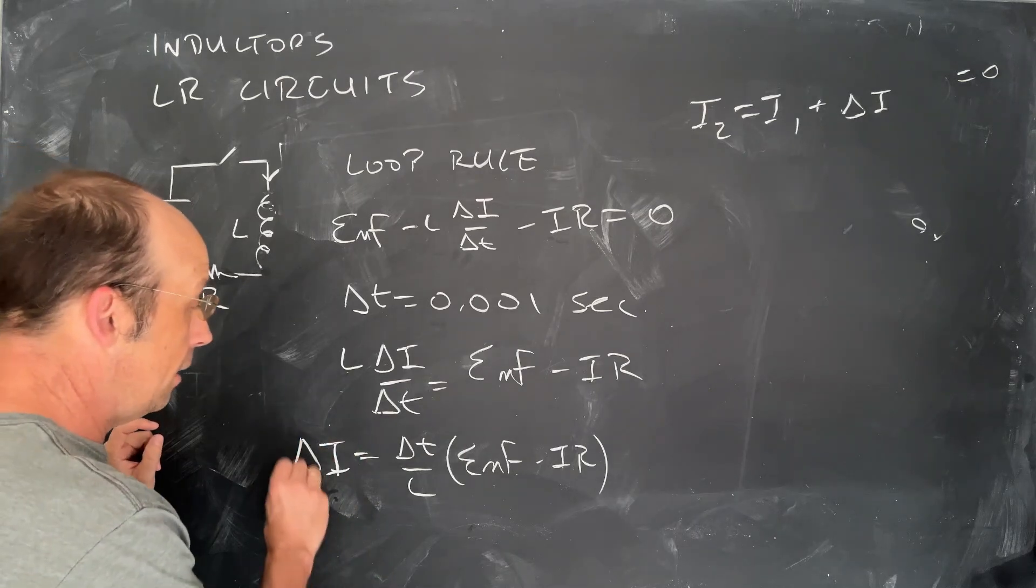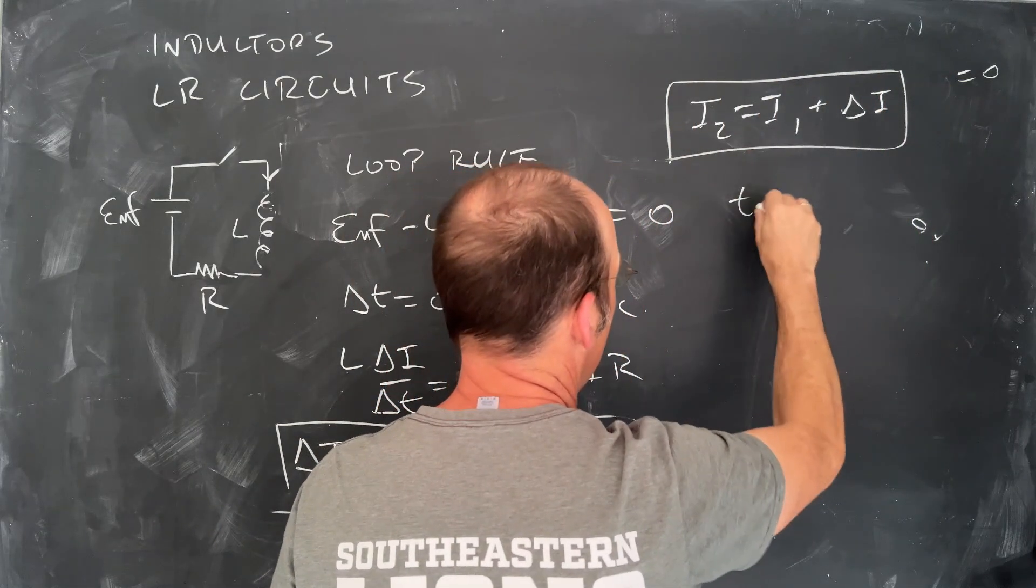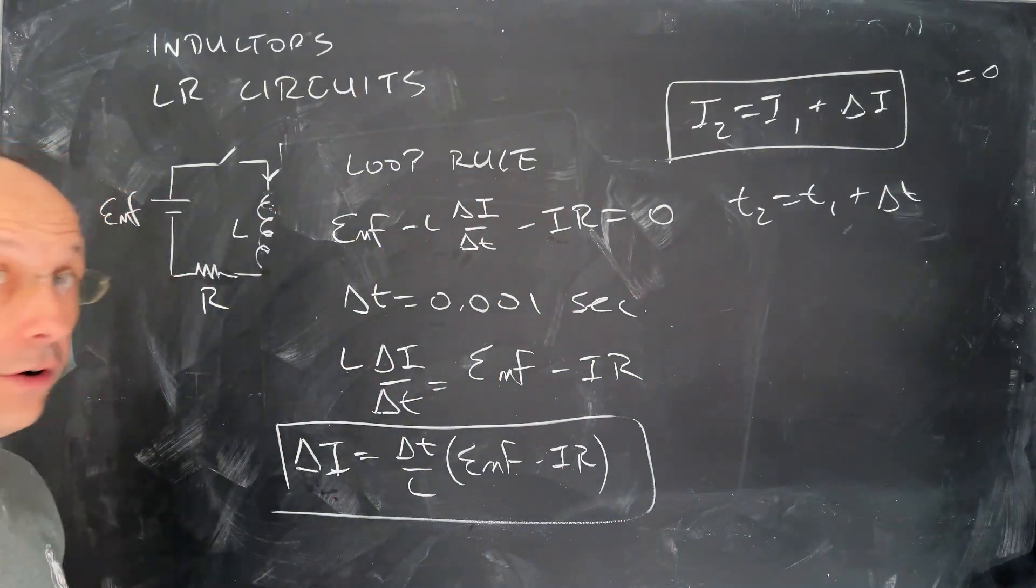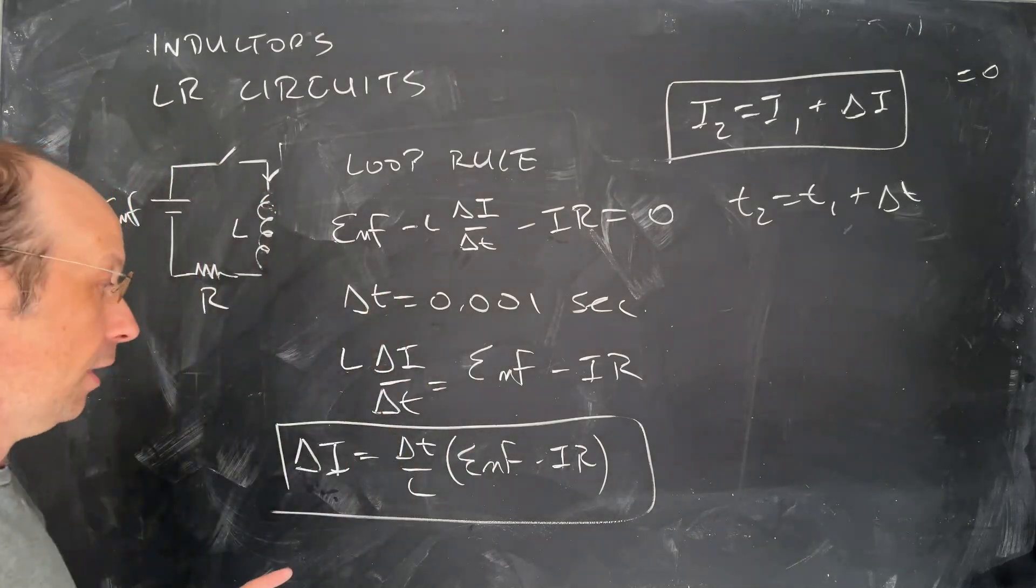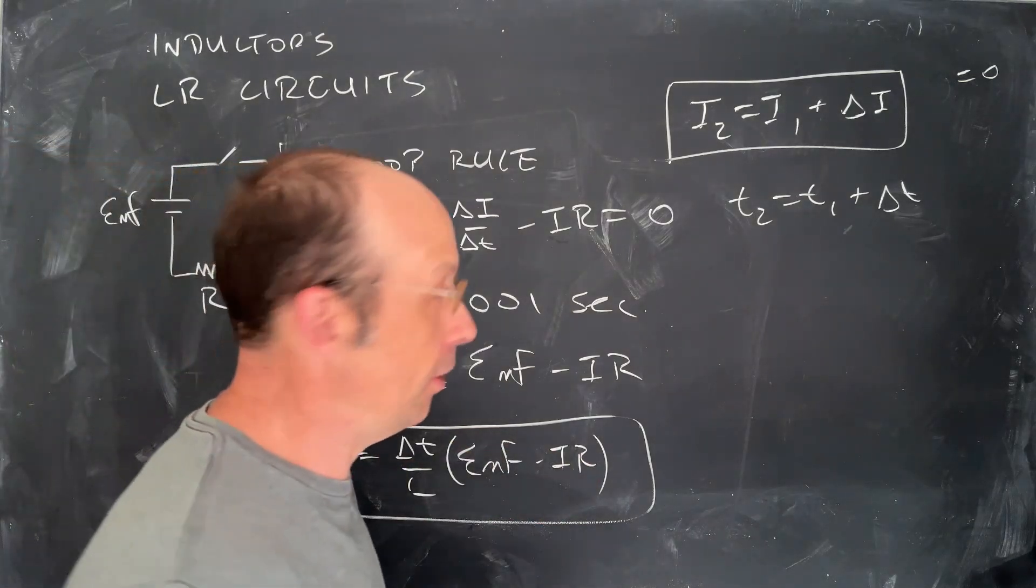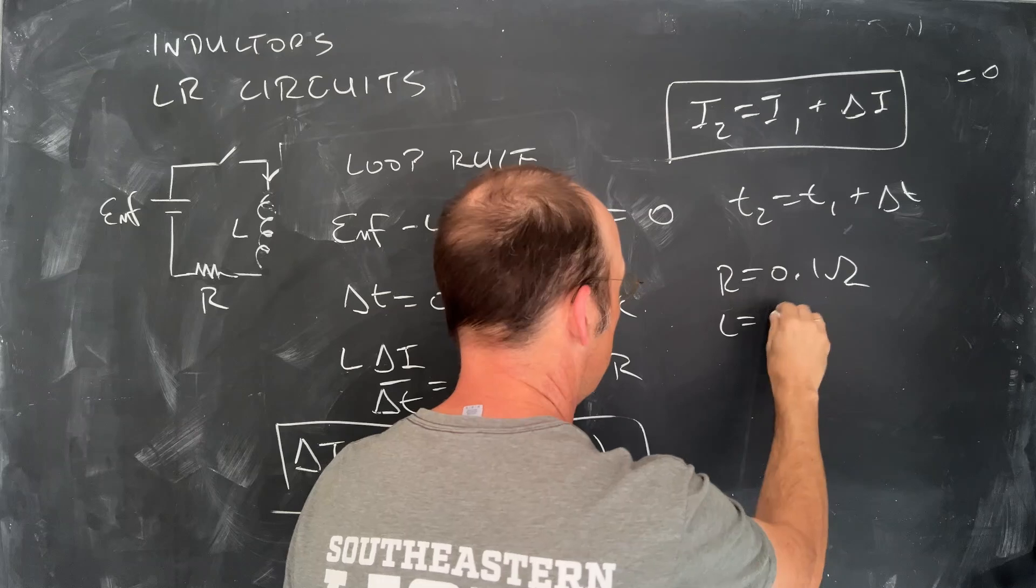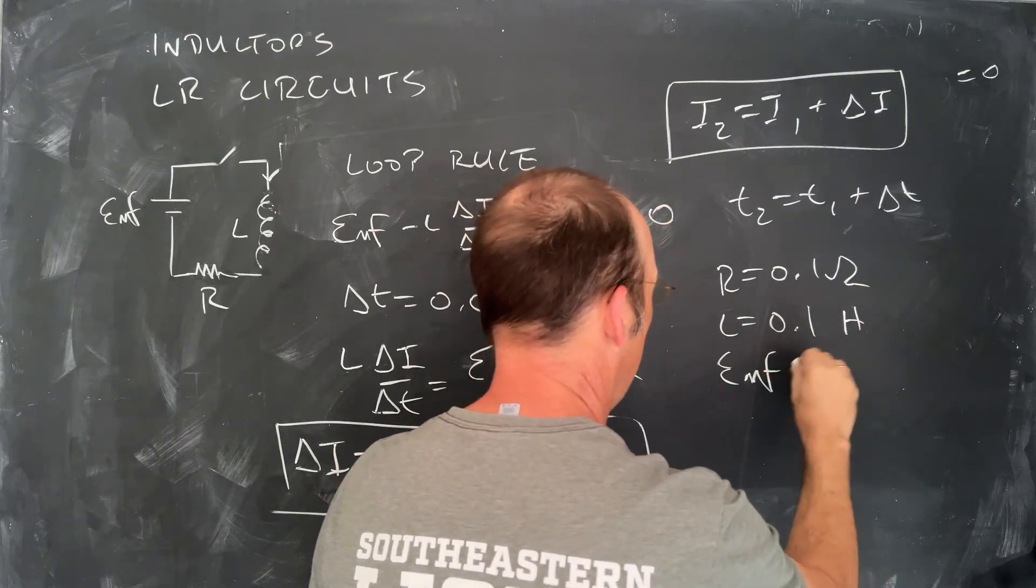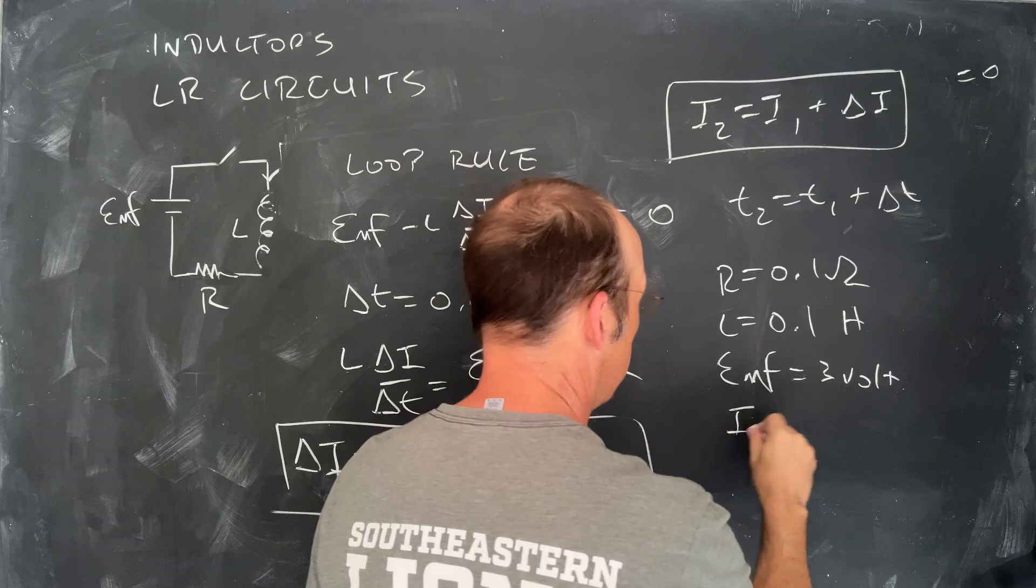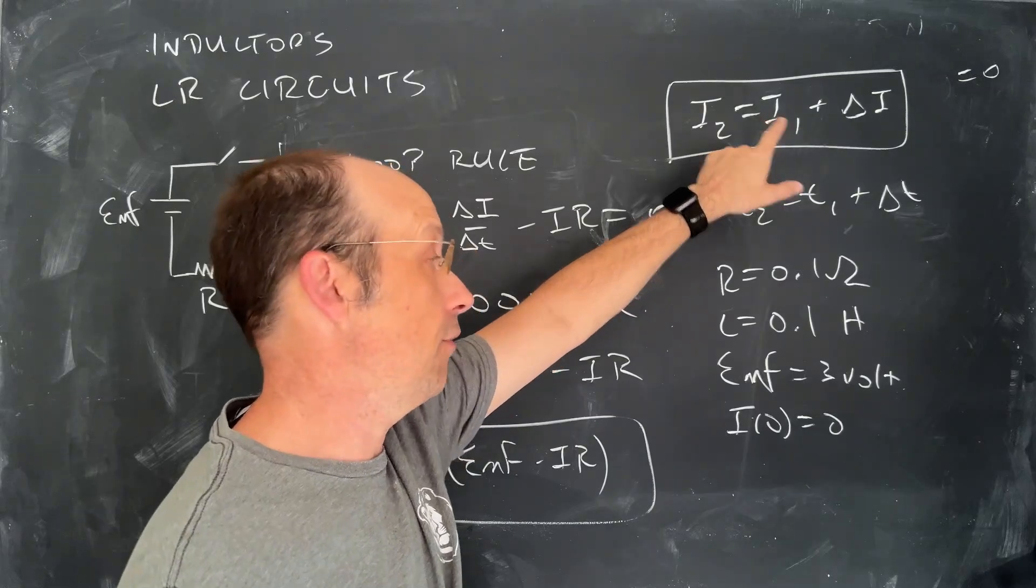So I can use that to find the new current, and then I can come back up here and do this again. Now I have a new current, so I'm going to have a new change in current, and then I just keep doing it again and again. So this is my step. Number one, calculate delta I, update I, and now after that I'm going to say T2 is T1 plus delta T. And then I do that, and I just keep doing it over and over and over again. Now to do this, I need numerical values. I need to know what's the time interval, what's the inductance, what's the EMF, what's the resistance. So I just pick some values here. Let's go with R equals 0.1 ohms, L 0.1 henrys, EMF is 3 volts. And then the initial current is 0, I of 0 is. I need to start with that, because once I calculate delta I, I have to add it to something the first time.